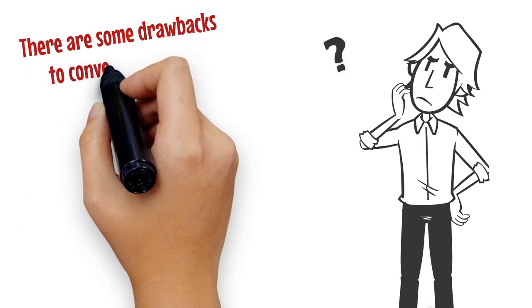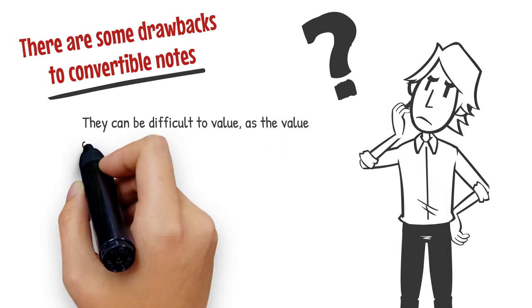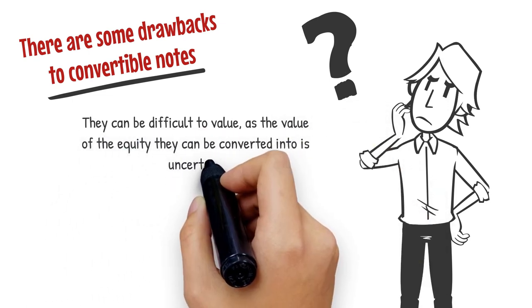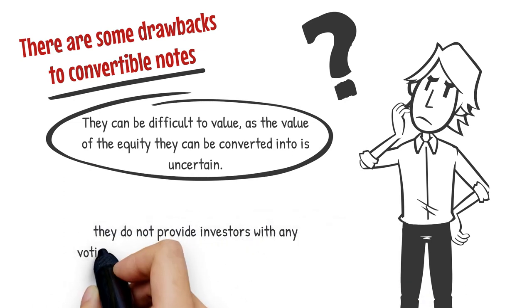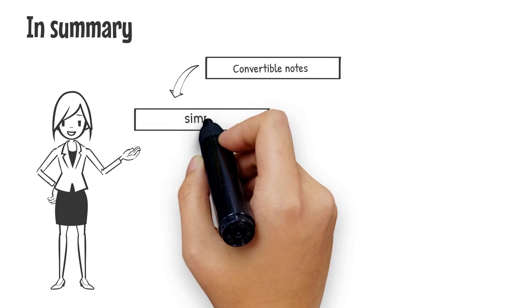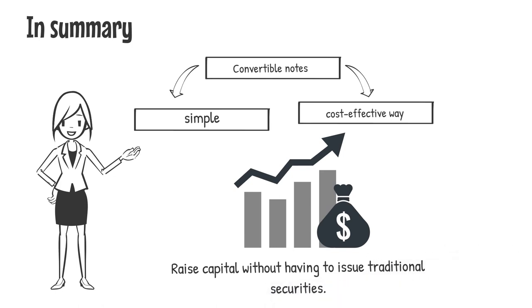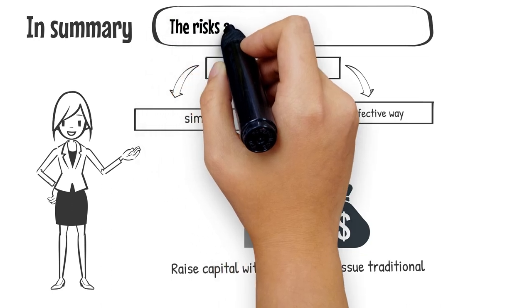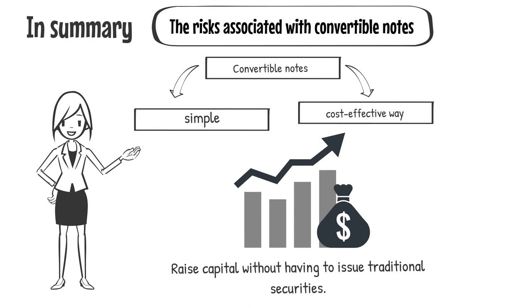However, there are some drawbacks to convertible notes. They can be difficult to value, as the value of the equity they can be converted into is uncertain. Additionally, they do not provide investors with any voting rights or other rights that come with owning equity in a company. In summary, convertible notes are a simple and cost-effective way for startups to raise capital, but it is important to understand the risks, as the value of the equity they can be converted into is uncertain.